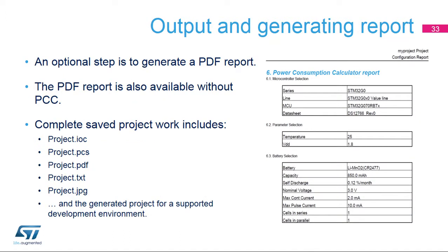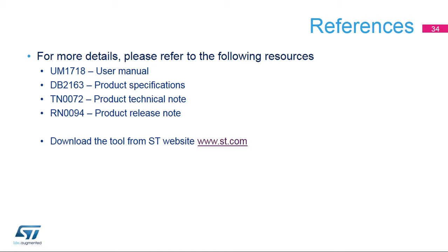A file with the extension .ioc contains the static initialization settings. The power sequence is saved using the .pcs extension. A PDF report is generated, along with simplified text and a separate .jpg image file with pinout. For more information about using the STM32CubeMX code generation tool, the documents listed in this slide are available for download on www.st.com. Thank you.